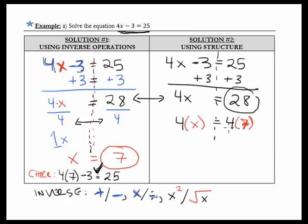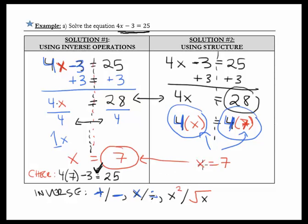Now look, if this thing is equal to this thing, and this thing is equal to this thing, it must be that this thing is equal to this thing. And we end up with, in fact, x equals 7. Same answer. Not a surprise that it's the same answer.